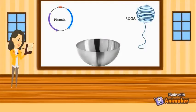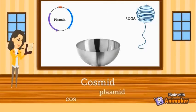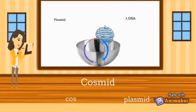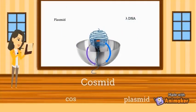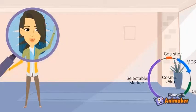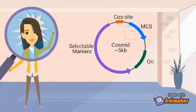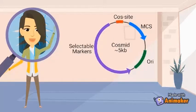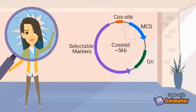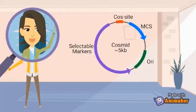If we break down the name, cosmid equals cos plus plasmid. Meaning that cosmid vectors are developed by combining the features of the plasmid vector and the cos site of lambda phage. Cosmids consist of a plasmid's origin of replication, selectable markers, multiple cloning sites, and the cos site taken from the lambda bacteriophage.